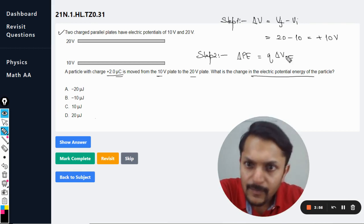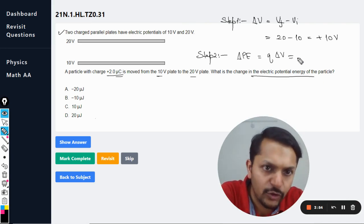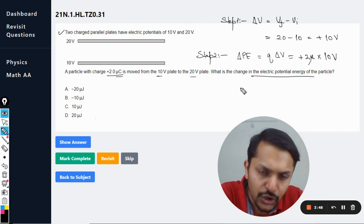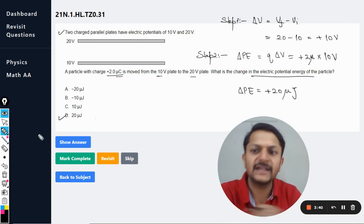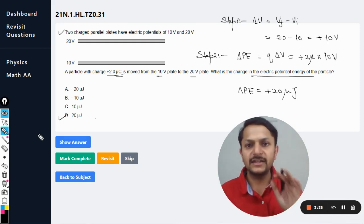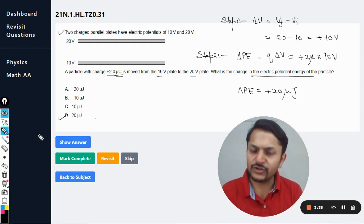Okay, so the charge is plus 2 micro coulomb, multiply by 10 volt. So the total change in potential energy is coming out to be positive 20 micro joule. Yes, so the answer is three. So this is how we do this question my students.